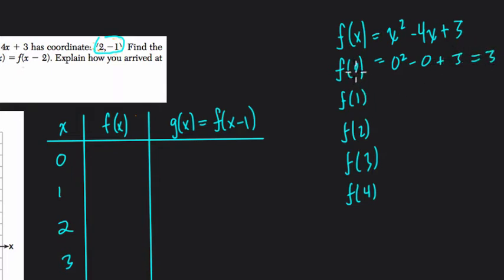If we plug in 1, we get 1² - 4 + 3. That's 1 - 4 = -3, plus 3 = 0. So if we plug in 1, our output is 0. If we plug in 2, we get 2² - 8 + 3. That's 4 - 8 = -4, plus 3 = -1. So if we plug in 2, our output is -1. If we plug in 3, we get 3² - 12 + 3. That's 9 - 12 = -3, plus 3 = 0.